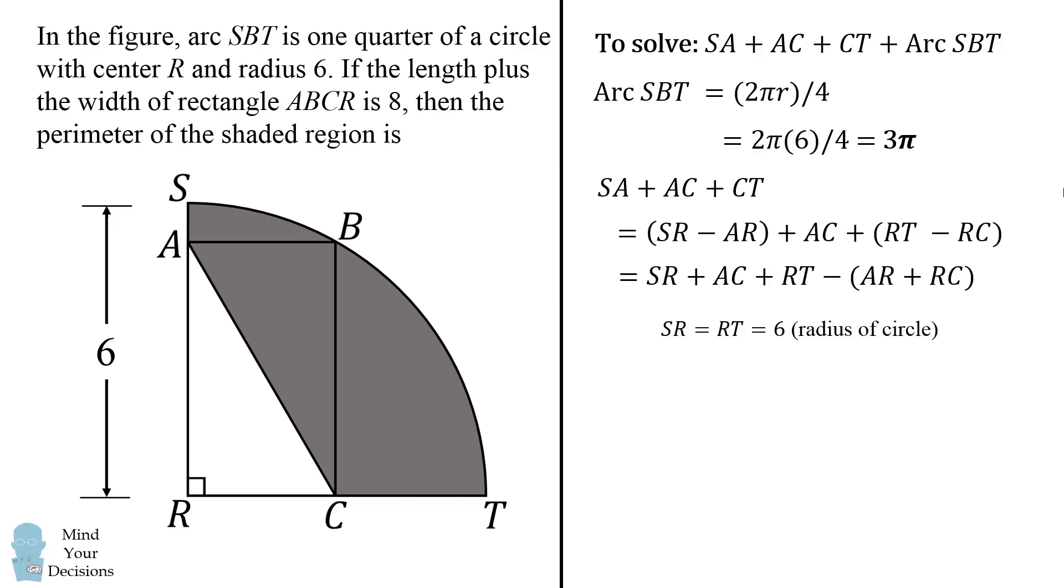From the problem, SR is equal to RT is equal to 6, because each is a radius of the circle. Next, what about the length of AC?